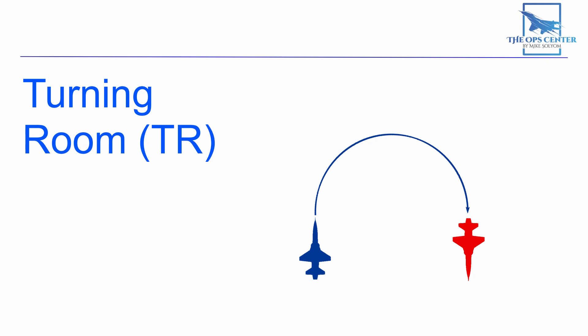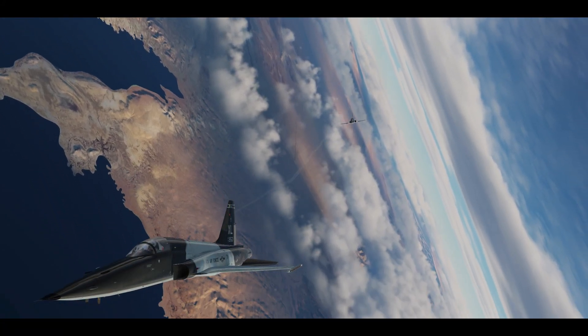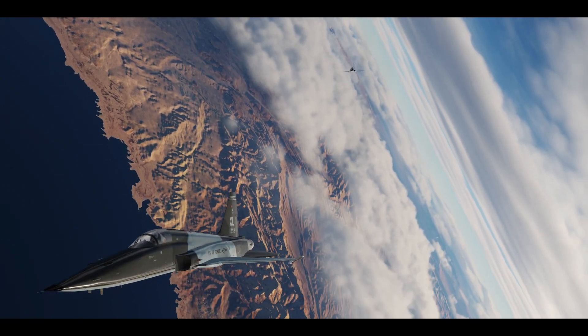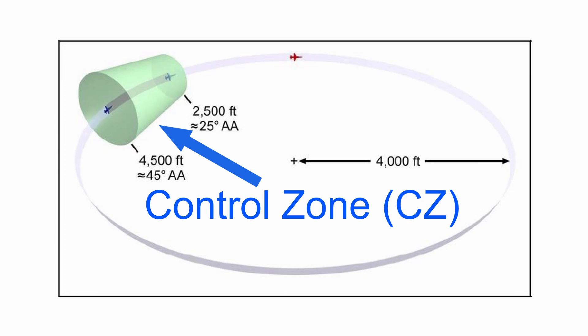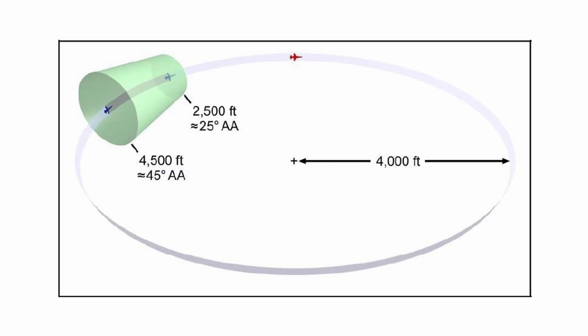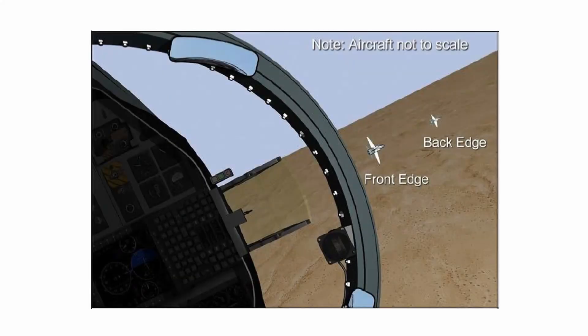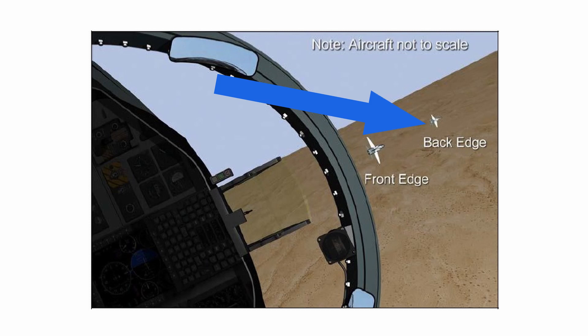Now that we've learned some things about angles and turns, we can talk about another fundamental concept in BFM: the control zone. As we maneuver through a dogfight, we need a way to tell when we're in position to assess the situation and decide if we can move in for a kill. That place is the control zone, defined as having 2500 to 4500 feet of slant range and within a 25 to 45 degree aspect angle cone. When you're within the control zone it means you're close to the bandit's turn circle, and it gives you the opportunity to decide if you're close enough for a shot or if you need to refine your position. This is what a pilot in a T-38 would expect to see when in the bandit's control zone — here, just above the canopy bow, is where you would see the bandit at the forward edge, and farther back you would see the bandit higher up above the canopy bow showing a higher aspect angle.